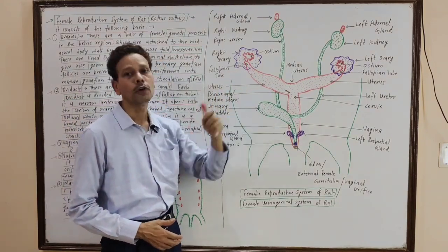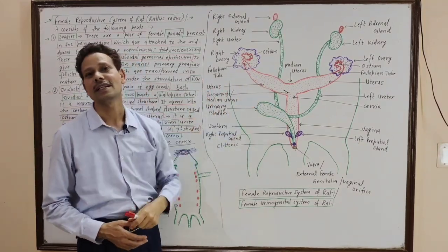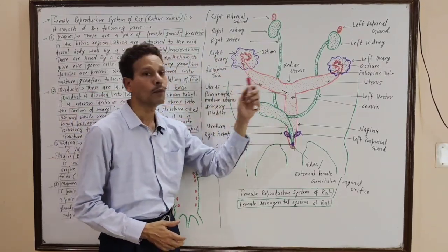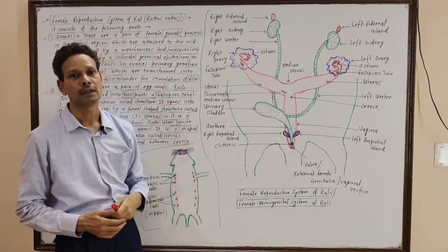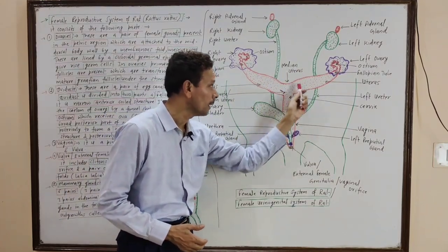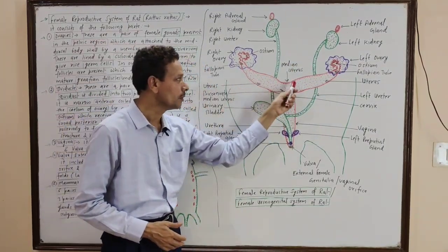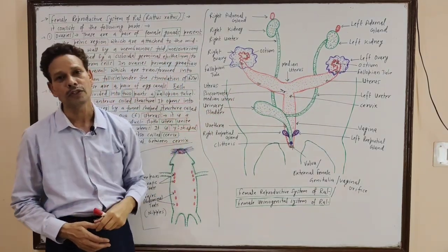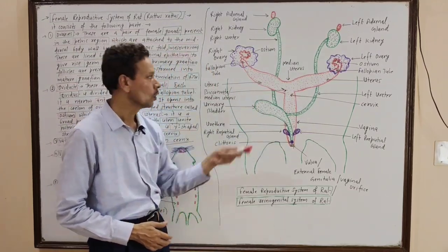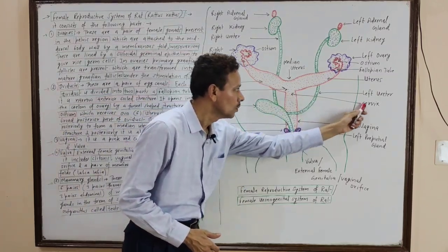Posteriorly, this fallopian tube joins the second part of the oviduct, which is the uterus. This posterior part of the oviduct is well developed and broader. Both sides of the uterus — both uteri — unite in this central middle part to produce a median uterus. This median uterus is almost Y-shaped in structure, and it opens posteriorly into the vagina through the cervix.